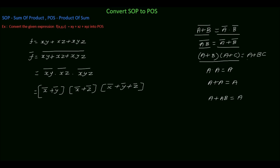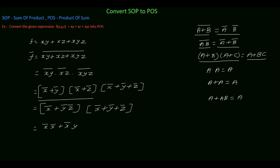Using the Boolean identity a plus bc equal to (a plus b)(a plus c), write (x complement plus y complement) dot (x complement plus z complement) as x complement plus y complement z complement. Then multiply this by (x complement plus y complement plus z complement), expanding: x complement dot x complement plus x complement dot y complement plus x complement dot z complement plus y complement z complement dot x complement plus y complement z complement dot y complement plus y complement z complement dot z complement.